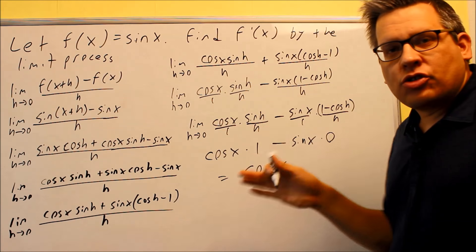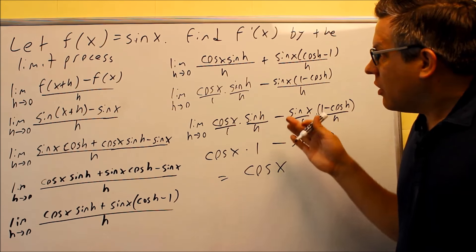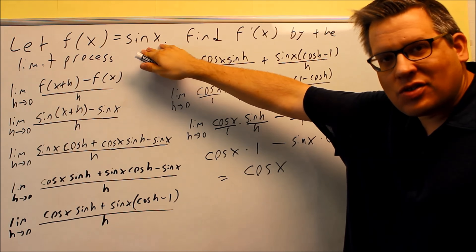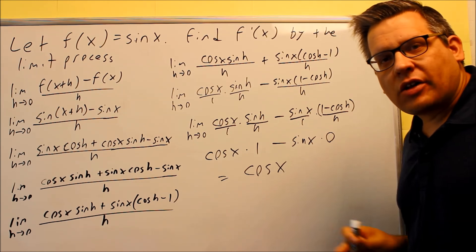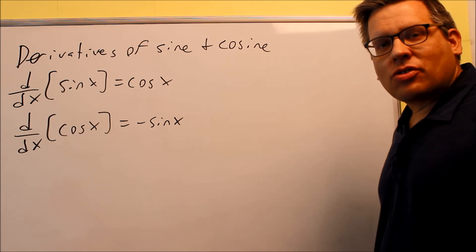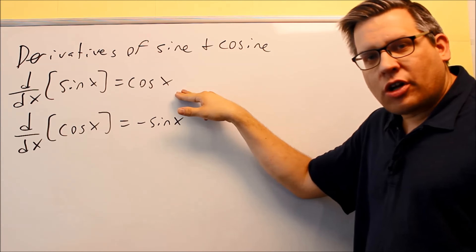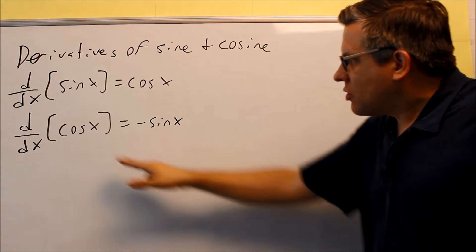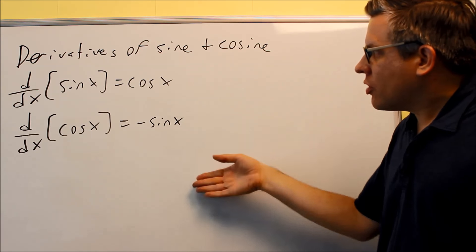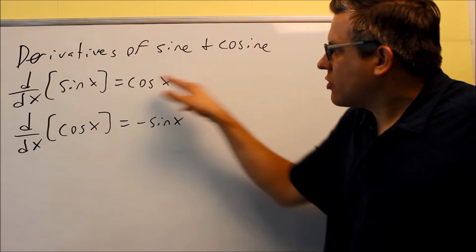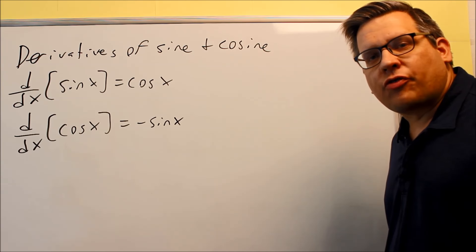With that, we can now generalize. If you were to start with cosine x instead of sine x and go through the same limit process, it would work exactly the same way. So here are our conclusions: the derivative of sine x is cosine x, and if we had done the same limit process starting with cosine x, we would have gotten negative sine x. So derivative of sine is cosine, and derivative of cosine is negative sine. Later in this session we'll talk about the derivatives of the other four trig functions.